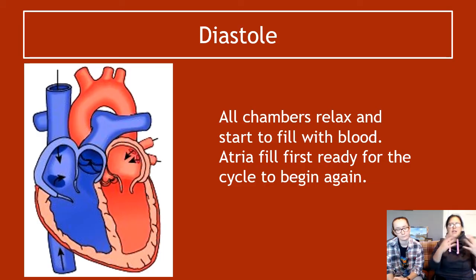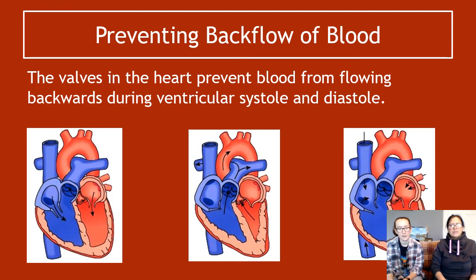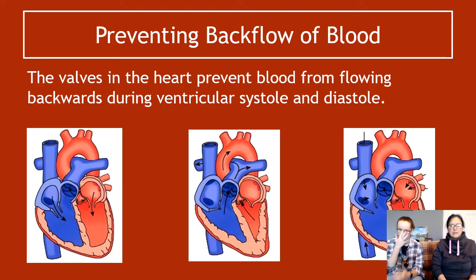Diastole is the relaxation of the heart. All the chambers relax — they stop contracting and they all start to fill with blood at the same time. During this phase, the atrioventricular valves are also open, so all four chambers can fill. Preventing the backflow of blood are the valves, which prevent any blood going back to the previous chamber during ventricular systole or diastole.